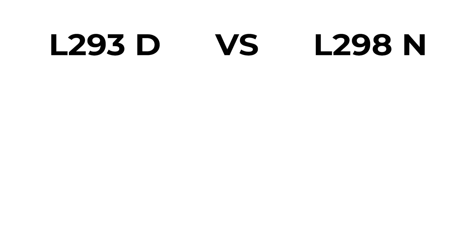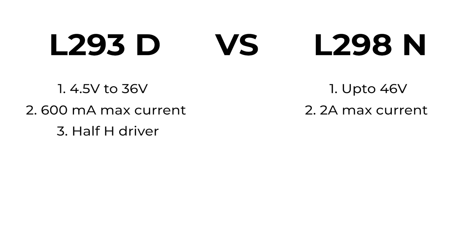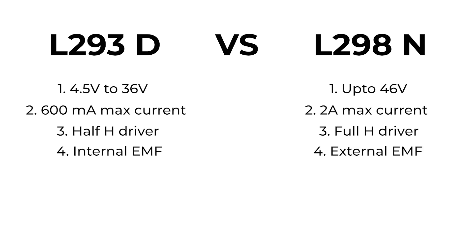The basic difference is that the L293D motor driver operates between 4.5 and 36 volts, whereas the L298N can operate up to 46 volts. A maximum of 600 mA current can be drawn through both channels of the L293D, whereas the L298N can draw up to 2 amperes from both channels. The L293D is a quadruple motor driver using half H-bridge drivers, while the L298N uses dual full H-bridge drivers. Flyback diodes are provided internally in the L293D but must be provided externally in the L298N.